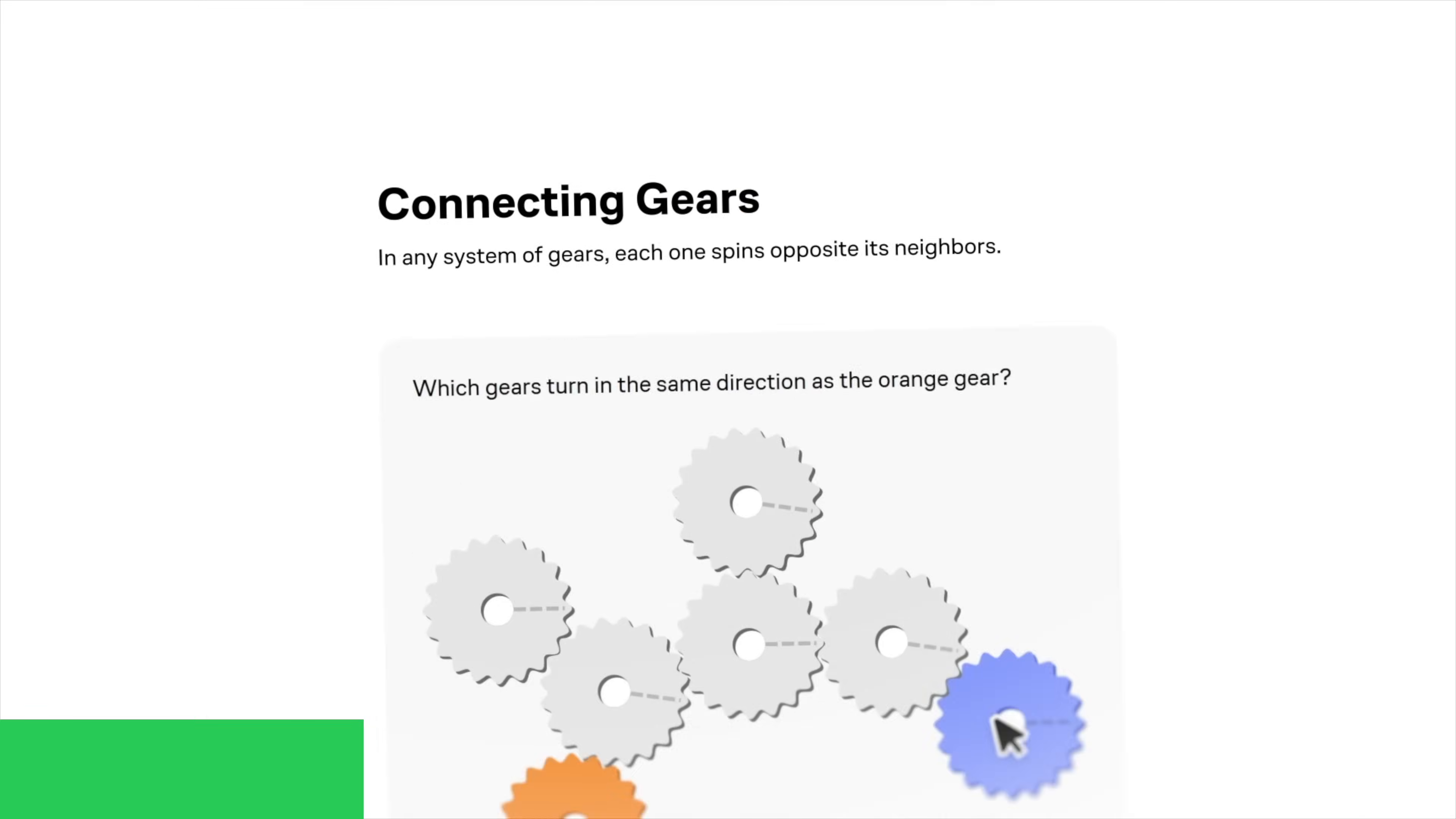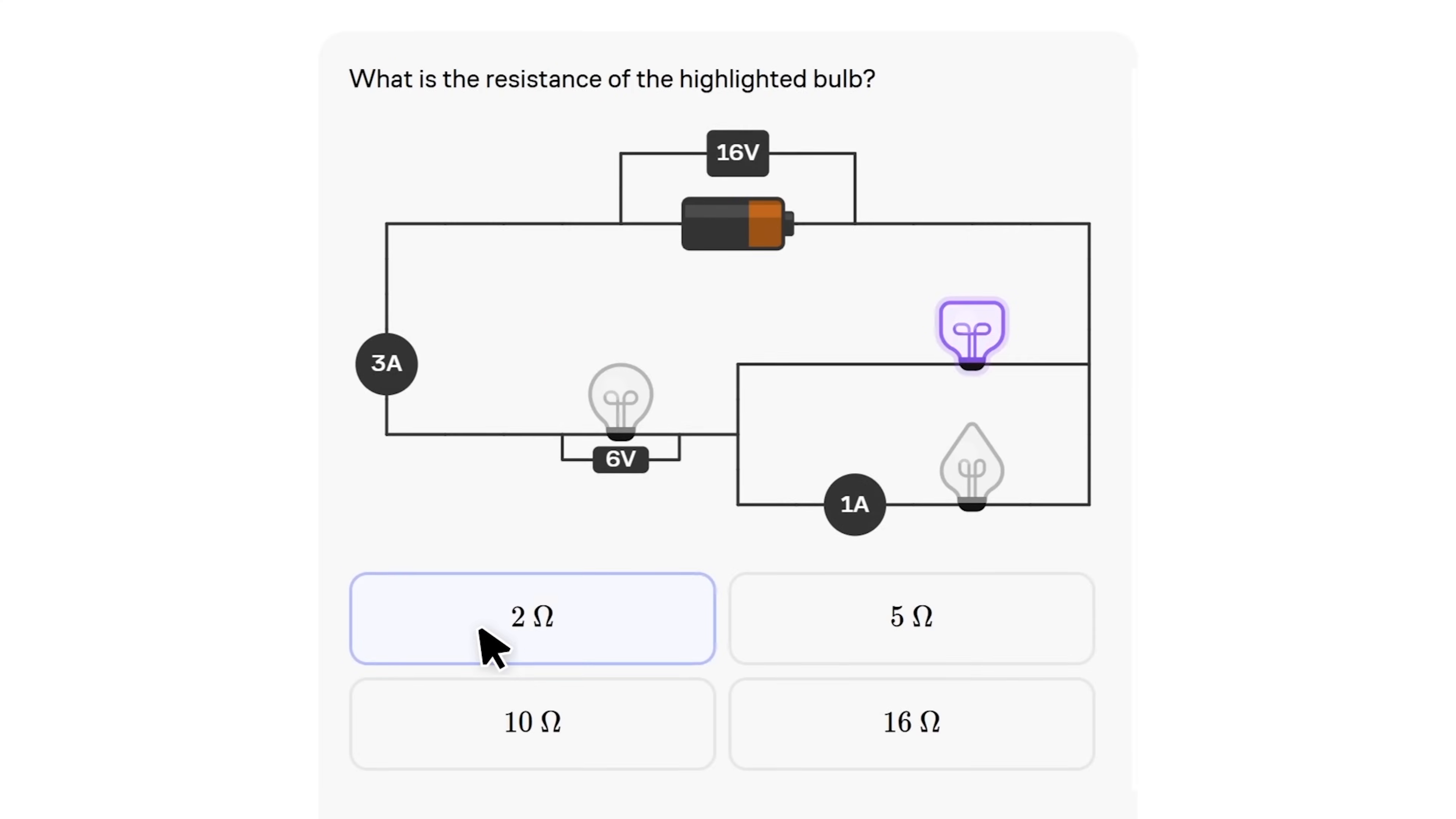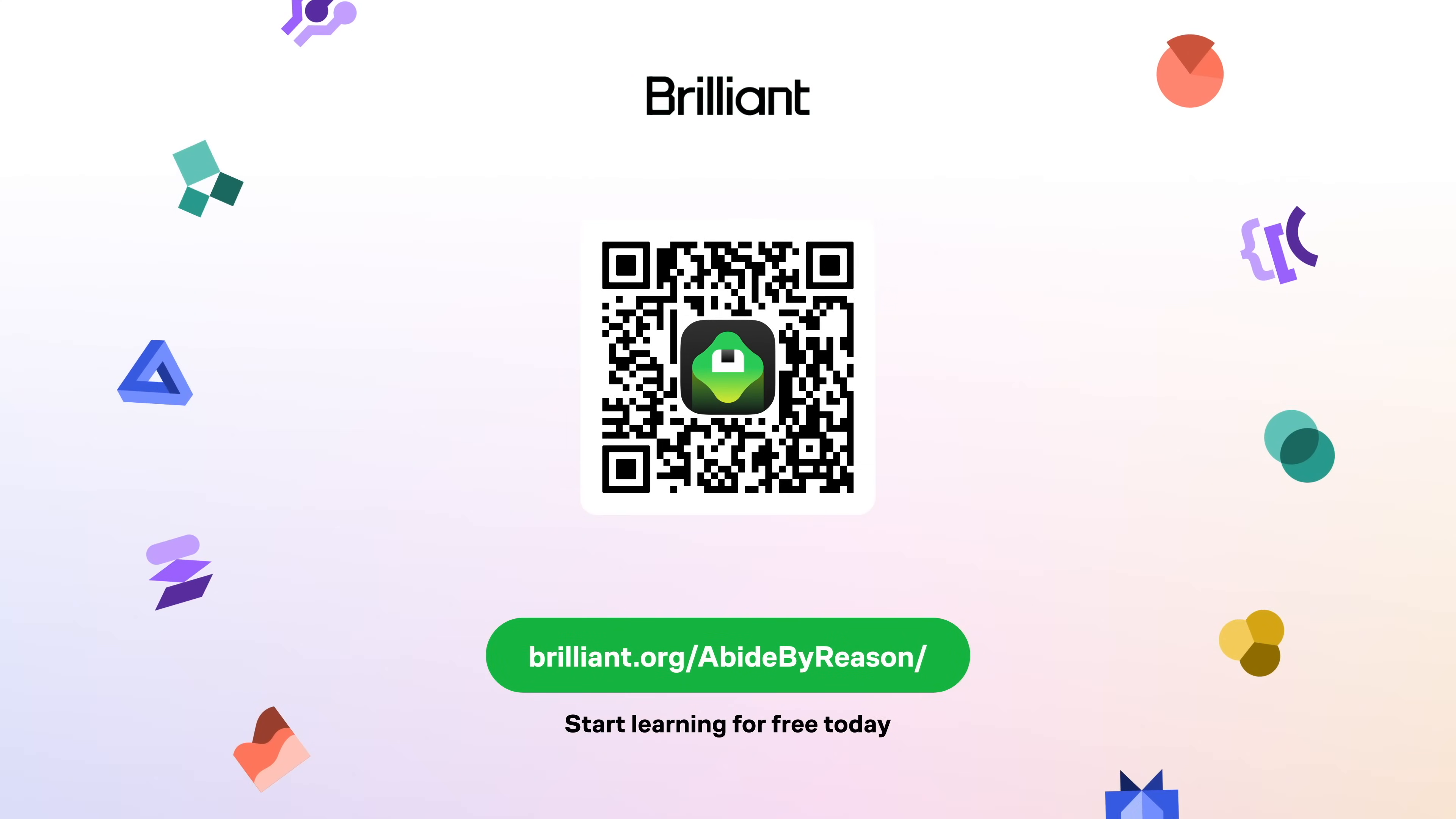A big thank you goes out to this video's sponsor, Brilliant.org. If you're anything like me, you're always looking for ways to improve your understanding of math and physics. Brilliant is an incredible resource to do just that. Their lessons are jam-packed with interesting problems to solve, incredible visuals, and clear explanations that will train you to think like a mathematician or a physicist. Whether you're trying to learn basic algebra or calculus, or dive into more exotic topics like quantum computing, Brilliant has something for you. If you'd like to give it a try, you can learn for free on Brilliant by either going to brilliant.org slash abide by reason, scanning the QR code on screen, or clicking on the link in the description. Brilliant's also giving my viewers 20% off an annual premium subscription, which gives you unlimited daily access to everything on Brilliant.